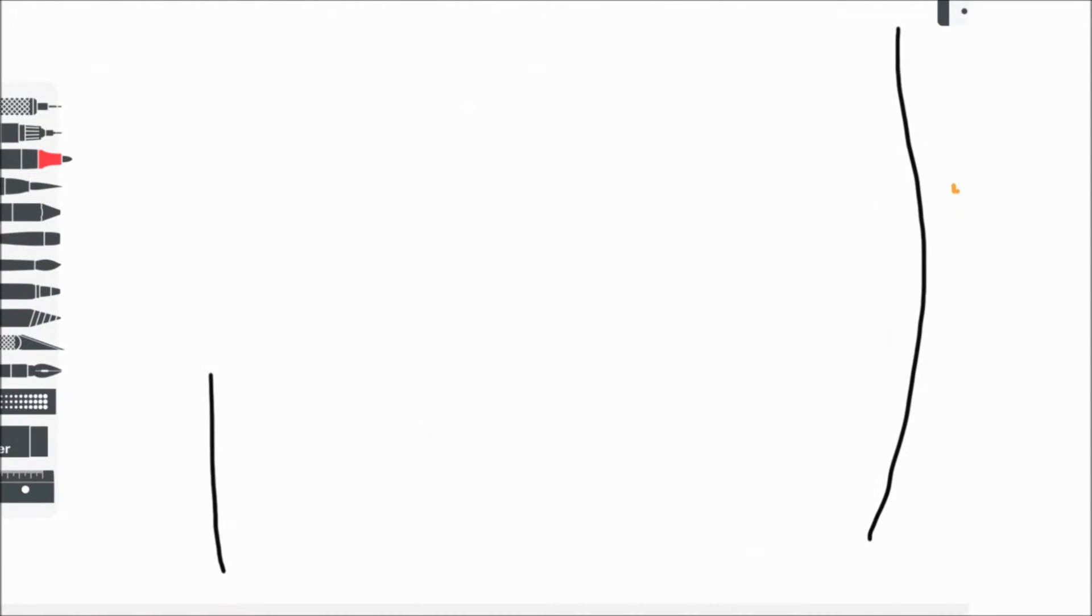Welcome to this video on the femoral triangle, which can be found on the anterior surface of the thigh. Here I've drawn the anterior surface of the left thigh with the lateral side down at the right-hand side of the screen and the medial down the left.